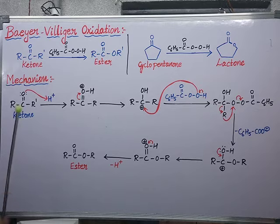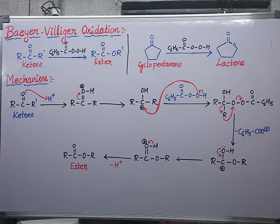So ketones are converting into esters through the Baeyer-Villiger oxidation process. This is about this oxidation reaction. Practice in order to remember the reaction more easily. Thank you so much for watching.